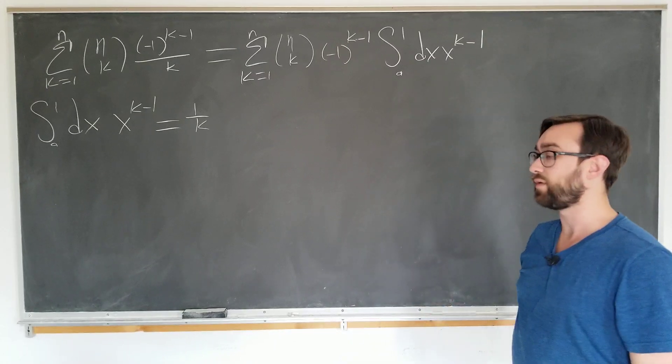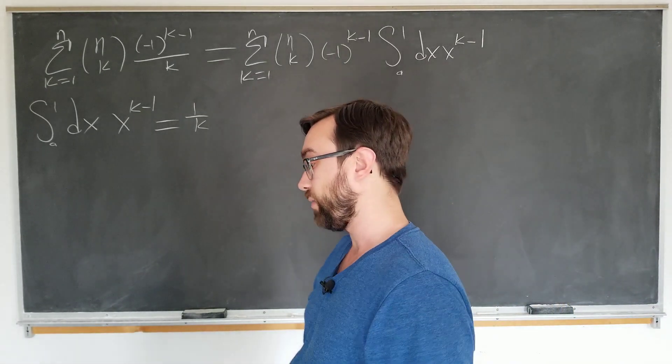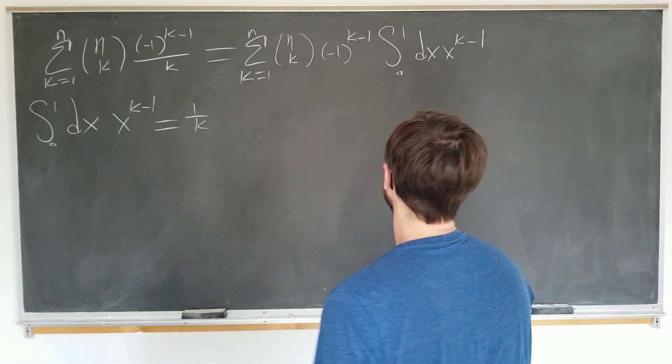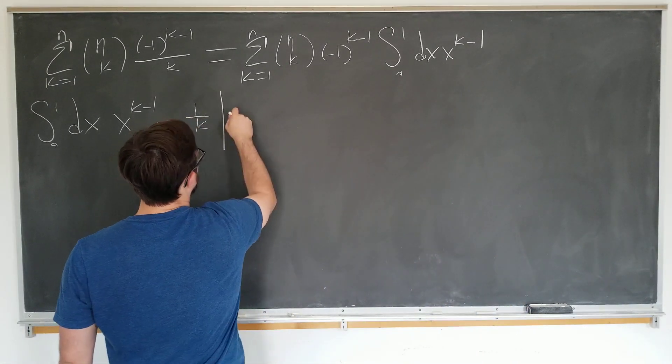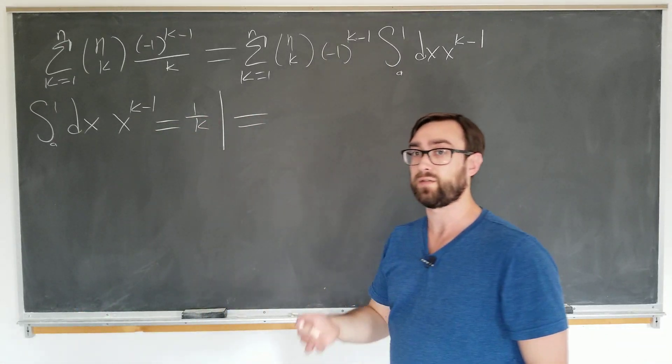And now what we want to do is interchange the order of the limits and write it as follows. So we want to interchange them now. And we also want to take out a minus sign for what we're going to use in a moment. Which brings us to the second trick.